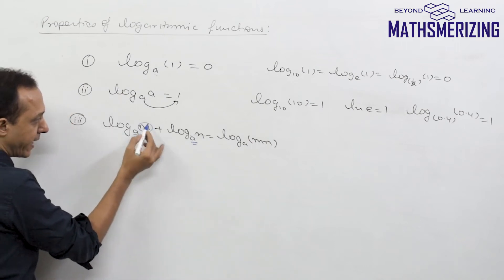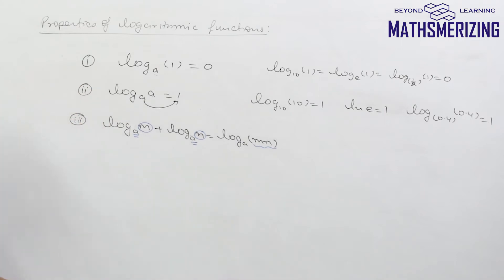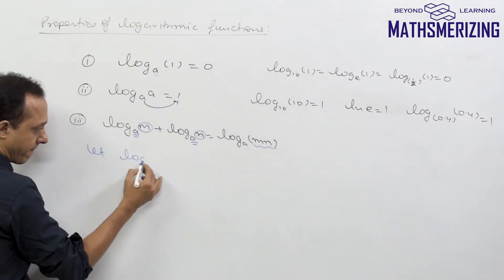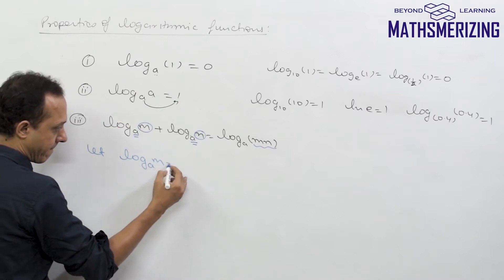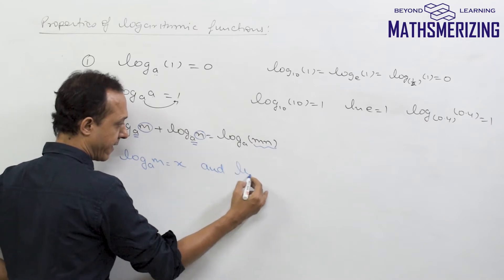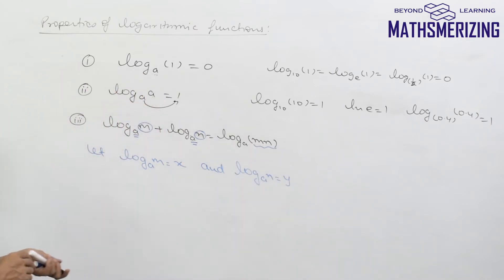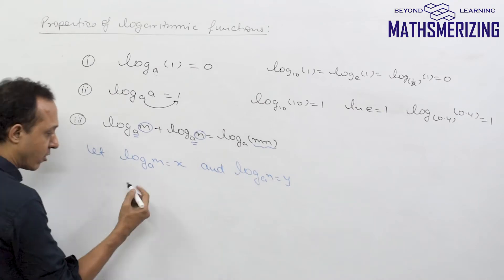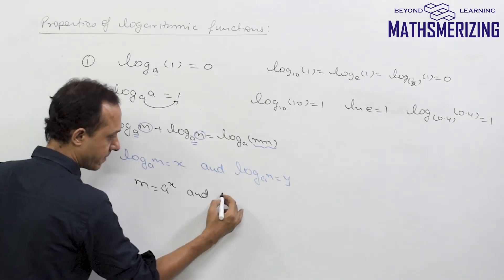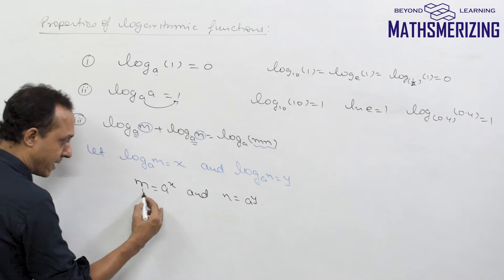Log m plus log n equals log(m·n). To prove this, let log_a(m) equal x and log_a(n) equal y. Taking the anti-log, we can write m as a to the power x and n as a to the power y.